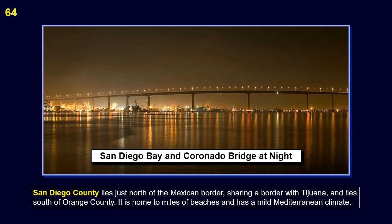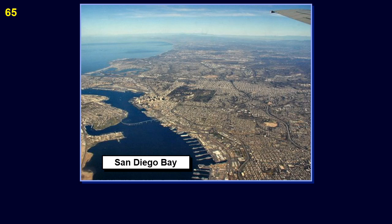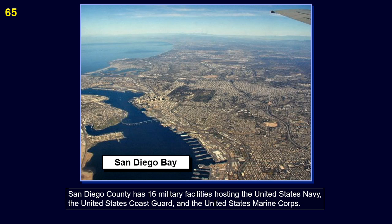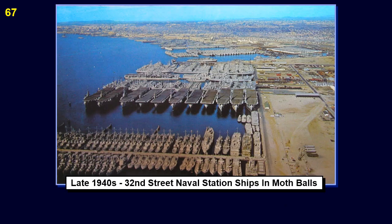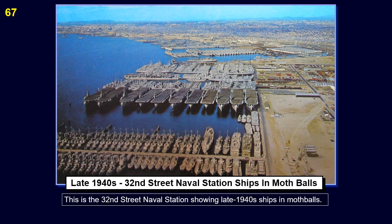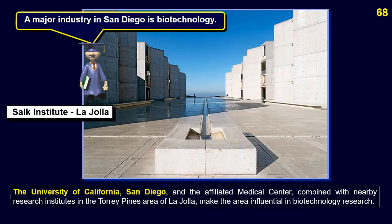San Diego County lies just north of the Mexican border, sharing a border with Tijuana, and lies south of Orange County. It is home to miles of beaches and has a mild Mediterranean climate. San Diego County has 16 military facilities hosting the United States Navy, the United States Coast Guard, and the United States Marine Corps. This is the U.S. Naval Base at North Island. This is the 32nd Street Naval Station showing late 1940s ships in mothballs. The University of California San Diego and the affiliated medical center, combined with nearby research institutes in the Torrey Pines area of La Jolla, make the area influential in biotechnology research.